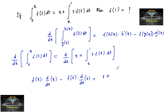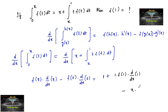For the right-side integral x to 1, applying the Leibniz rule: upper limit 1 gives 1·f(1)·(d/dx of 1), minus x·f(x)·(d/dx of x).